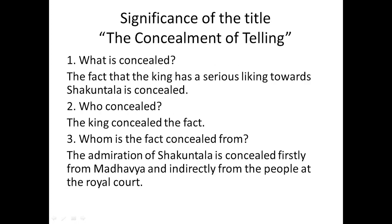Now we will discuss the significance of the title. The title is 'The Concealment.' So what is the concealment? The fact that the King has a serious liking towards Sakuntala is concealed. Who concealed the fact? The King concealed it. And from whom? The admiration of Sakuntala is concealed firstly from Madhya, and indirectly from the people at the royal court, by the King.